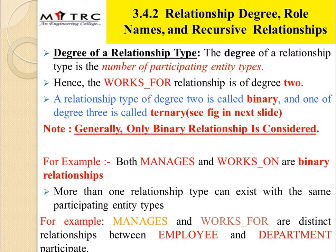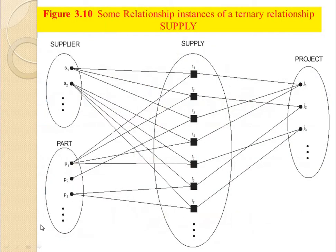A relationship type of degree 2 is called a binary relationship. If we have a relationship with more than two participating entity types, then it becomes degree 3, and such a relationship is called a ternary relationship. For example, 'Supply' is a relationship connecting three entities: supplier, part, and project. Since there are three entities, the degree is three and it is called a ternary relationship.